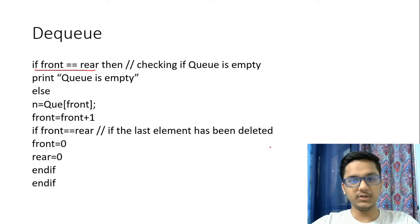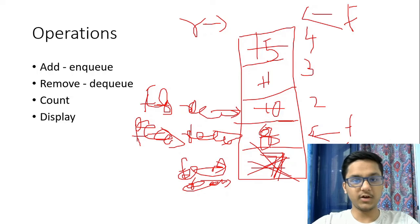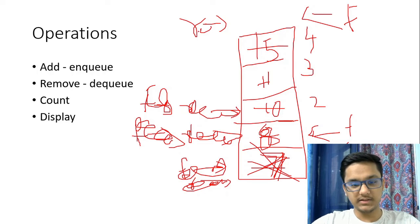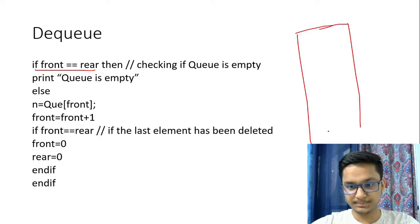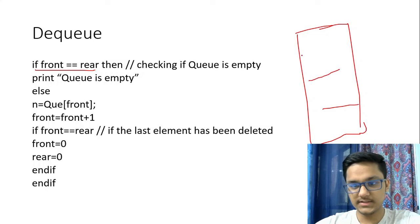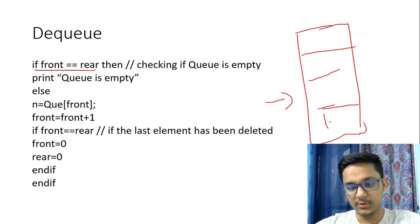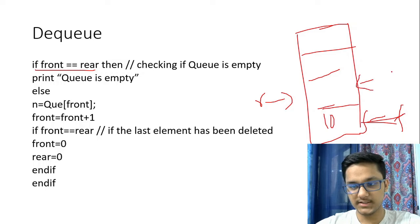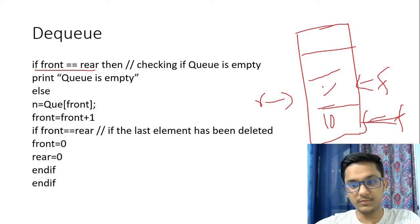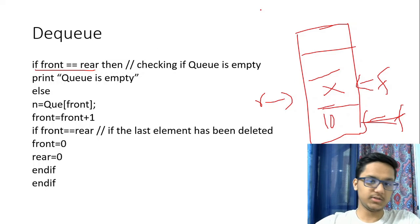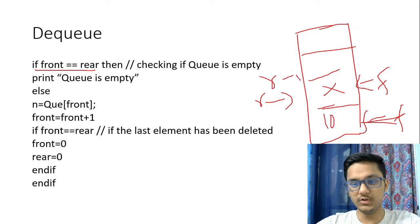One important thing to note: the value of the front pointer cannot be greater than that of the rear pointer. It must be equal to or less than rear. If the rear is at position one and front has incremented to that same position, you can't increment front further because there's no element to remove. This is why front is always less than or equal to rear. However, rear can be greater than front because you can always increment rear to add a new element.